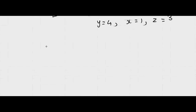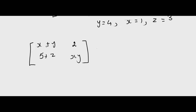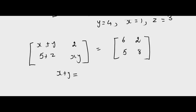Similarly, another problem: [X plus 5, 2; 5 plus Z, XY] equals [6, 2; 5, 8]. By equality of matrices, X plus Y equals 6 (equation one). Also, 5 plus Z equals 5, which implies Z equals 0.